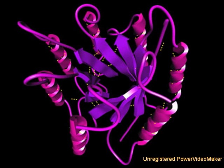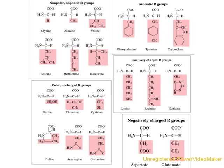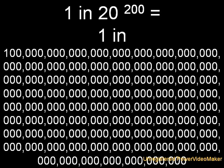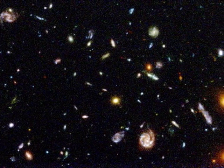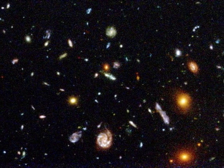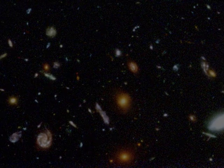Now you may have heard the argument that genes cannot form by chance. Take for example a protein that is 200 amino acids long. Since there are 20 different amino acids, the chance of such a protein forming by chance is 20 to the 200th power, or roughly 1 in 1 followed by 260 zeros. To say that such an occurrence is unlikely is putting it mildly — it's more likely for two people to randomly pick the same subatomic particle in the entire visible universe.